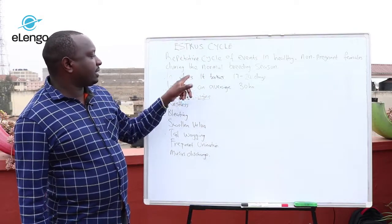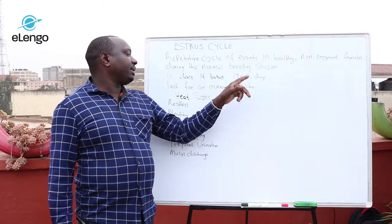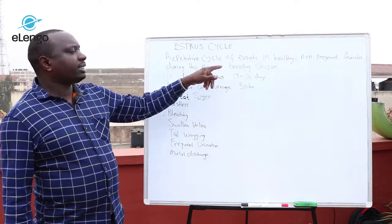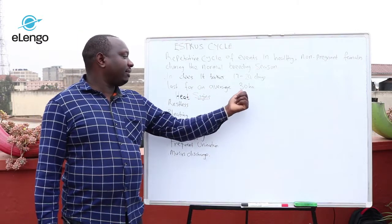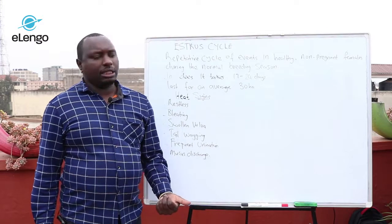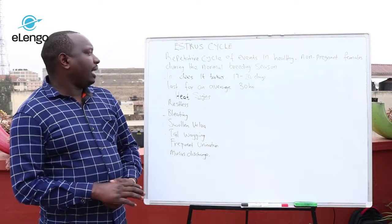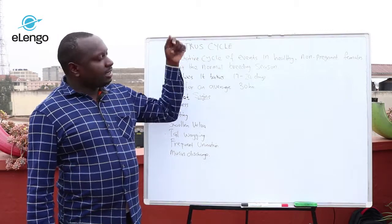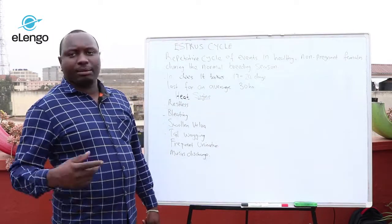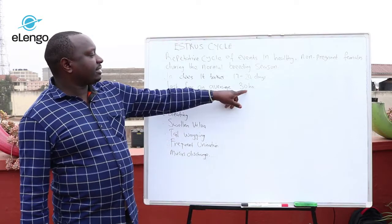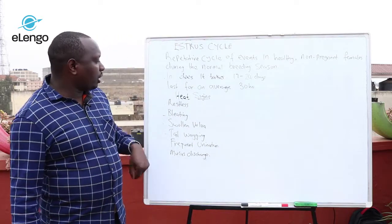The estrus cycle in does takes 17 to 24 days, and each cycle lasts for an average of 30 hours. During this cycle, if the doe needs to be served it must be served within 30 hours. This is because of what we call ovulation — the initial sign of this cycle shows that the egg, or ovum, has been released or is about to be released. Therefore, service must be done once the egg has been released.